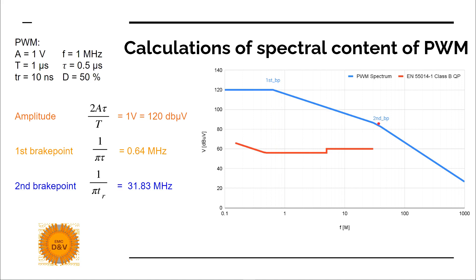The second envelope on the graph is the limit line for EN 55014-1 conducted emission class B quasi-peak. The limit line runs from 150 kHz to 30 MHz, and we can see how far above the limit our PWM spectral content is. This represents the maximum worst-case noise from our signal — in reality the noise is likely somewhat less, as this is a theoretical value.